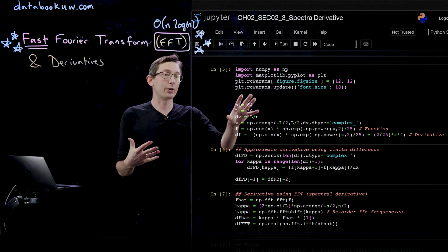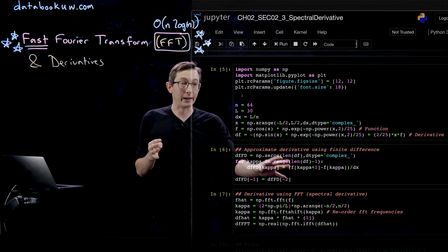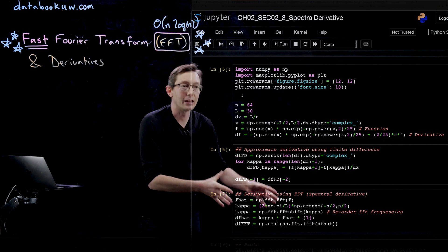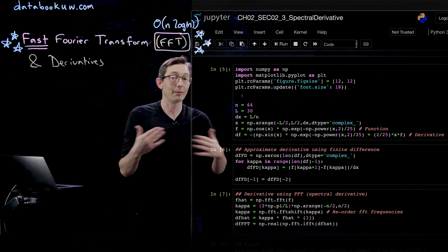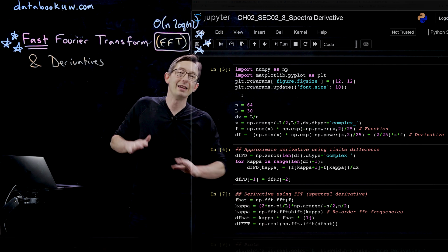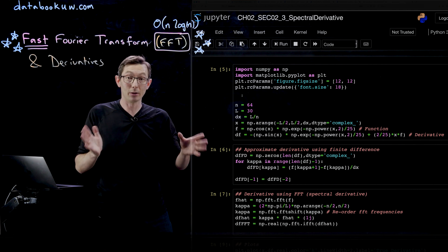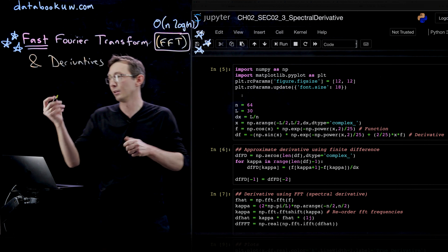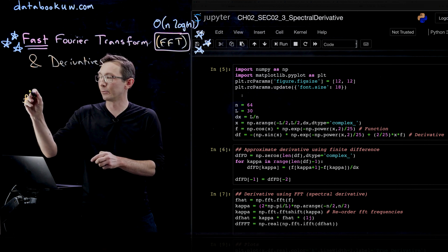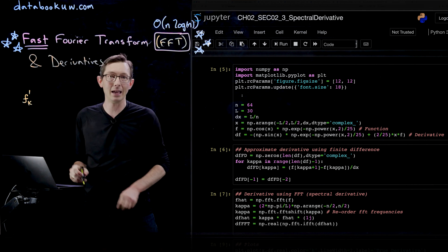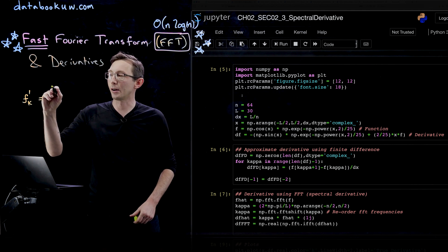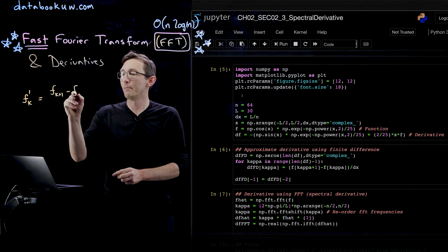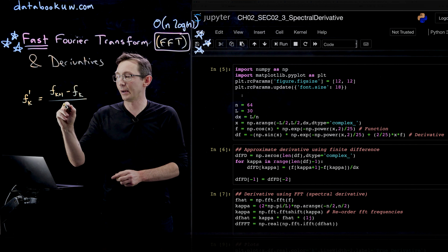Now we're going to approximate that derivative using both a finite difference scheme, the simplest thing you could think of, and using the FFT or the spectral derivative, and compare how accurate they are. This isn't as exhaustive as you could possibly get. The finite difference derivative is really crude. Here I'm literally going to approximate the derivative at step k by our function at k plus 1, the k plus 1th element, minus Fk divided by delta x.